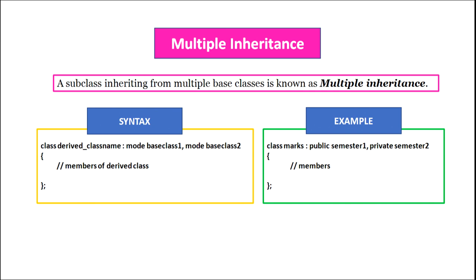A subclass inheriting from multiple base classes is known as multiple inheritance. The syntax is: class, derived class name, colon, visibility mode, base class 1, comma, visibility mode, base class 2, and then the body of the child class. For example, class marks inheriting from two classes semester 1 and semester 2 is written as: class marks colon public semester 1, comma, private semester 2. This means class marks is inheriting from class semester 1 publicly and from class semester 2 privately.